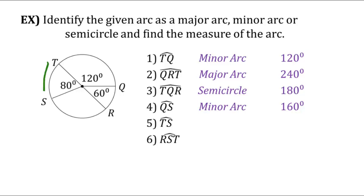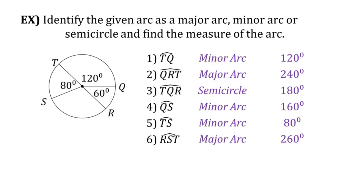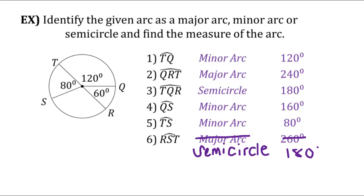Next is arc TS — that one's easy, it's 80 degrees. And last, arc RST. We already know that arc TQR is 180, and RST is just the other half of that, so that is a semicircle. Since T and R are both endpoints of a diameter — as we discovered when we found the measure of TQR — anything with endpoints T and R is going to be 180 degrees.